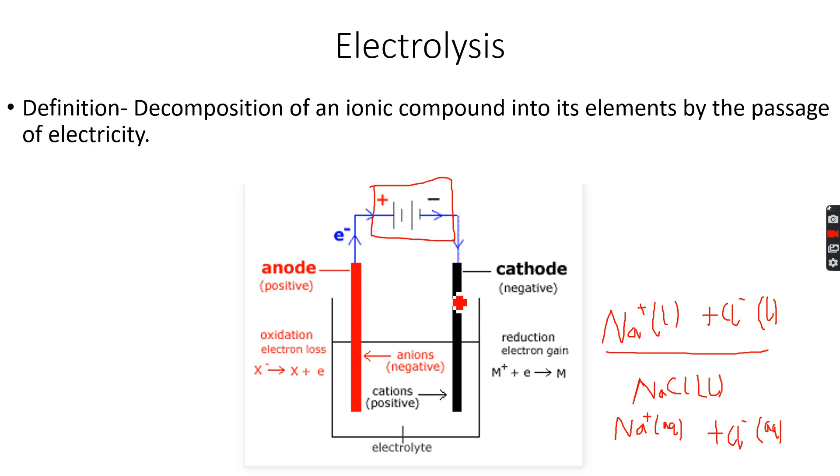Now the cathode is negative because electrons flow from the cell to this cathode, and the anode is positive because the electrons flow away from the anode towards the positive terminal of the cell. So the negative terminal of the cell gives electrons to the cathode, and the positive terminal of the cell receives electrons from the anode.